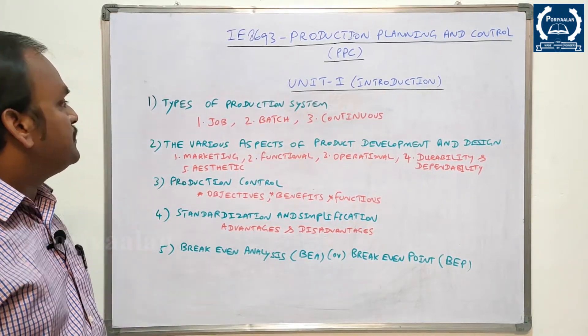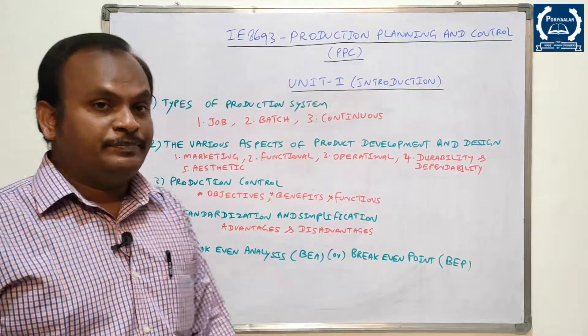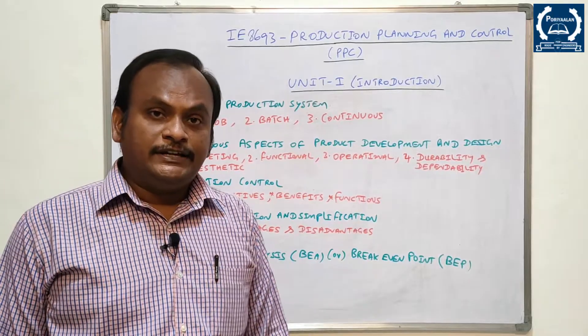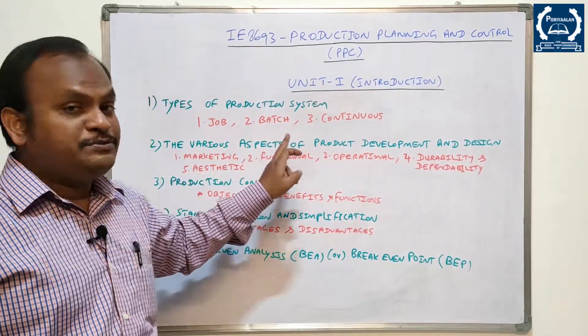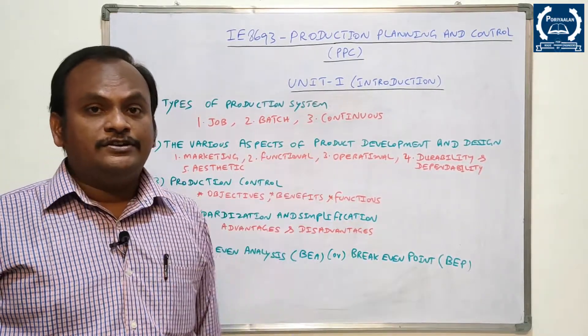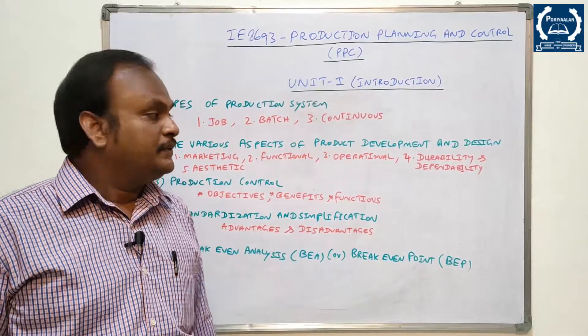First question: Types of production system. There are three types - job production, batch production, and continuous production.